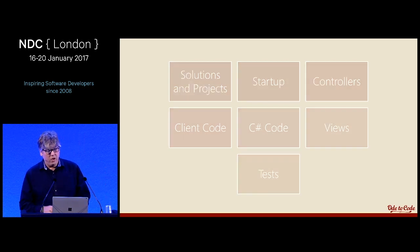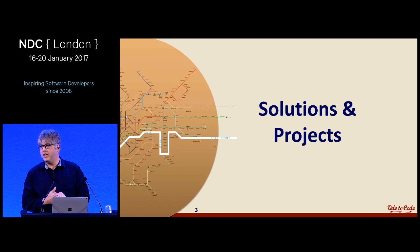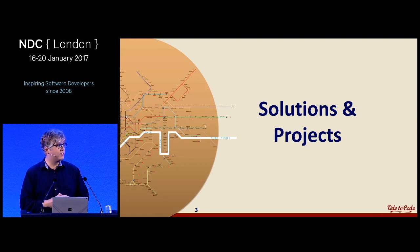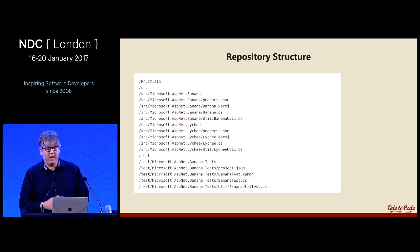So we'll just get started with some of the boring things like solutions and projects so we can build up a crescendo and have a very exciting finish. Solutions and projects — how do you organize them with .NET Core?